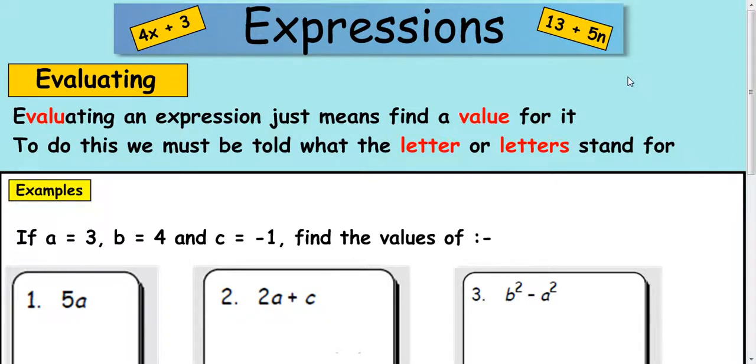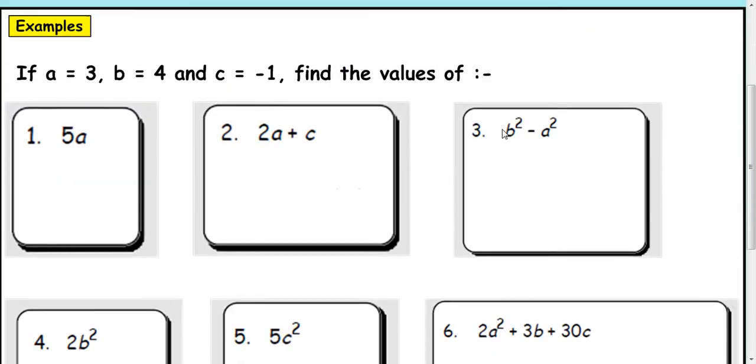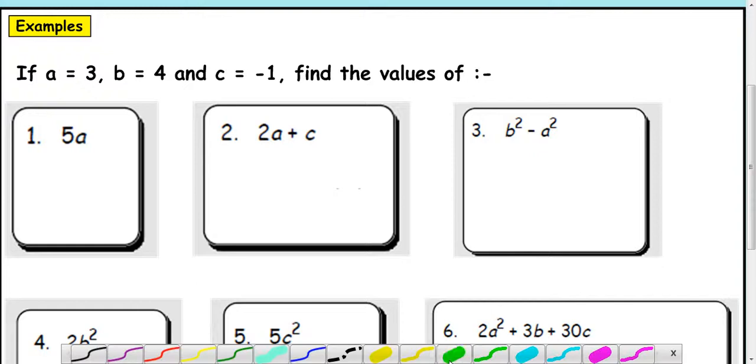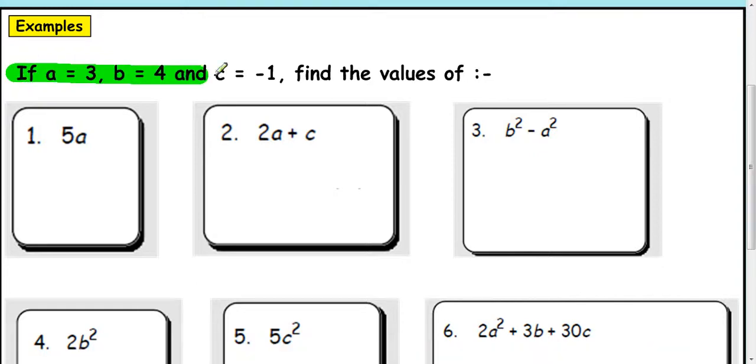In this lesson we're going to look at evaluating expressions, which uses substitution. We're going to be told what the letters stand for and then we have to substitute them in to get a value for the expression. So we're going to look at six examples here. The most important line is this one at the top, it's telling you what A, B and C are. So that is where we get all our information from. Now notice that C is negative one and not positive. A lot of mistakes are made from reading errors, so look out for negatives.